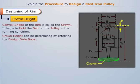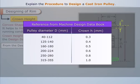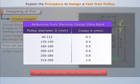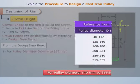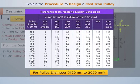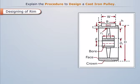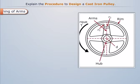From the design data book: for pulley diameter 40 mm to 355 mm, and for pulley diameter 400 mm to 2000 mm, the corresponding crown height values are provided. Now let's design the arms.